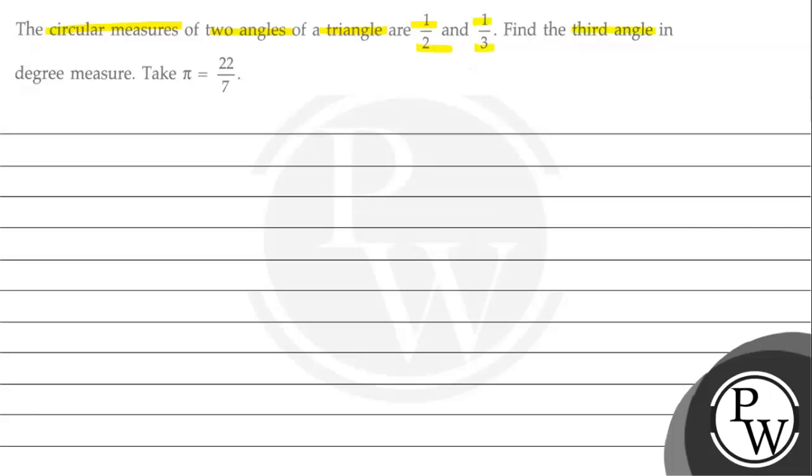Find the third angle in degree measure. Take pi is equal to 22 upon 7. In this question, we have a circular measure of two angles, 1 upon 2 and 1 upon 3. Circular measure means that it is 1 upon 2 radians and 1 upon 3 radians. You have to take the third angle in degree measure and pi is equal to 22 upon 7.